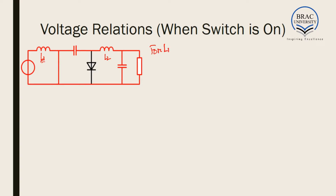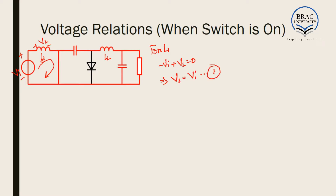For L1, when the switch is on, current flows in this direction. If we name the input voltage VI and the inductor voltage VL, we get: −VI + VL1 = 0, or VL1 = VI. We label this equation number 1. This is the case where inductor L1 gets charged.